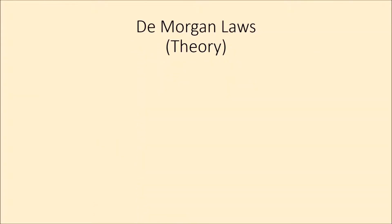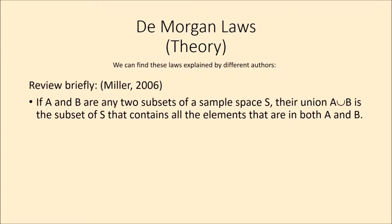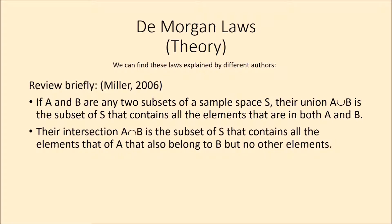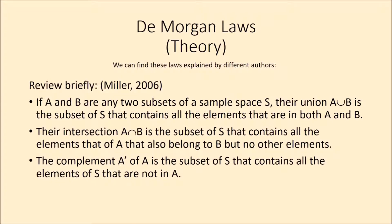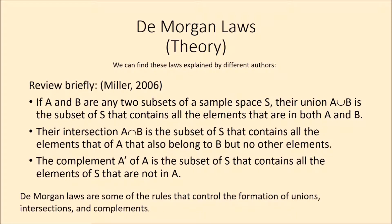The De Morgan laws — theory. We can find these laws explained by different authors. Let's review briefly. If A and B are any two subsets of a sample space S, their union is the subset of S that contains all the numbers that are in both A and B. Their intersection is the subset of S that contains all the numbers of A that also belong to B, but no other numbers. The complement of A is the subset of S that contains all the numbers of S that are not in A. The De Morgan laws are some of the rules that control the formation of unions, intersections, and complements.